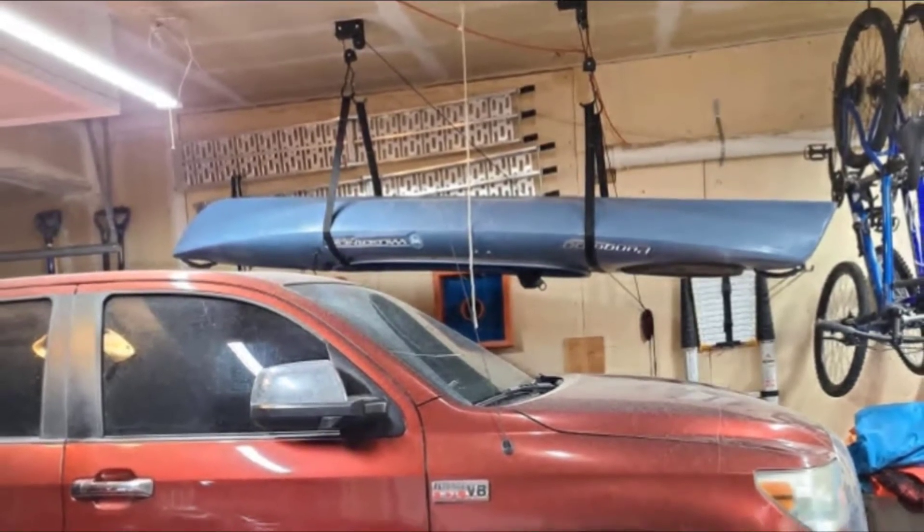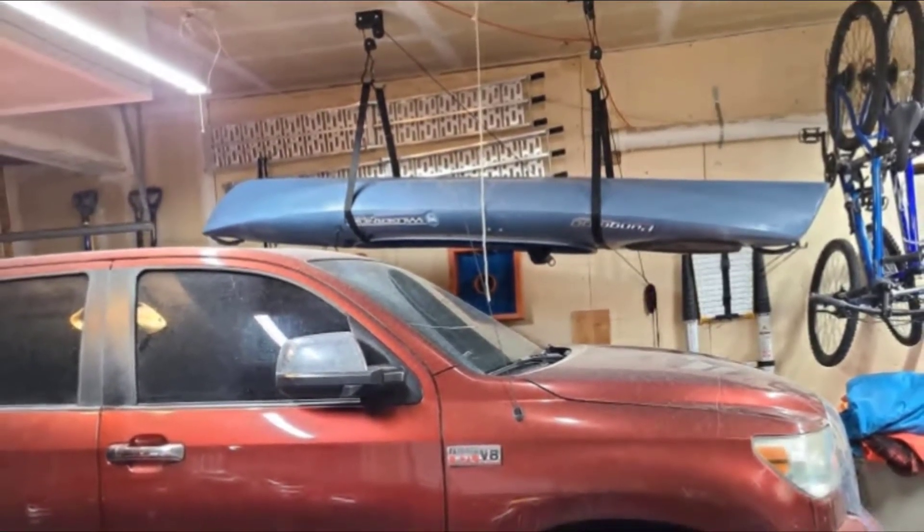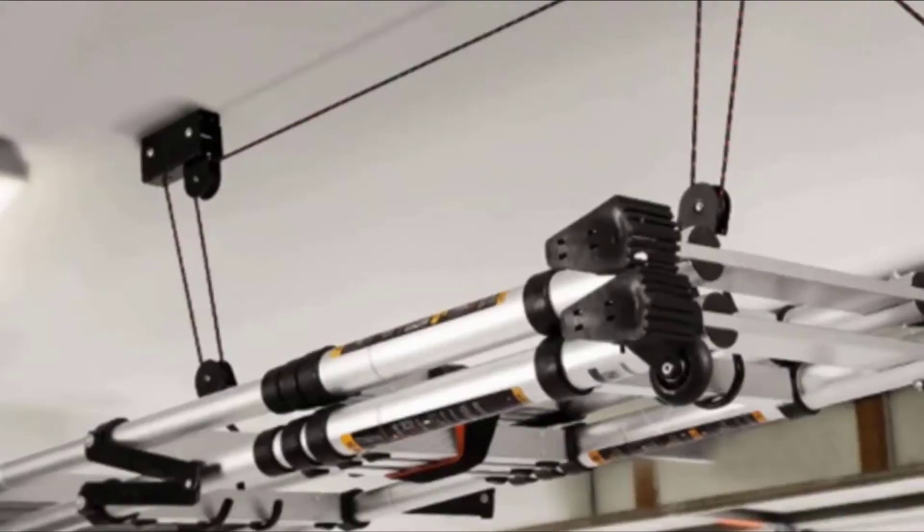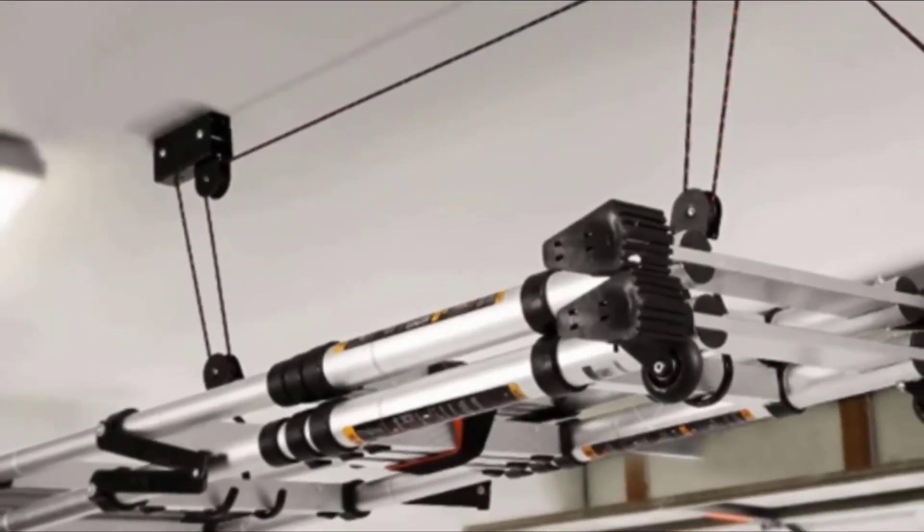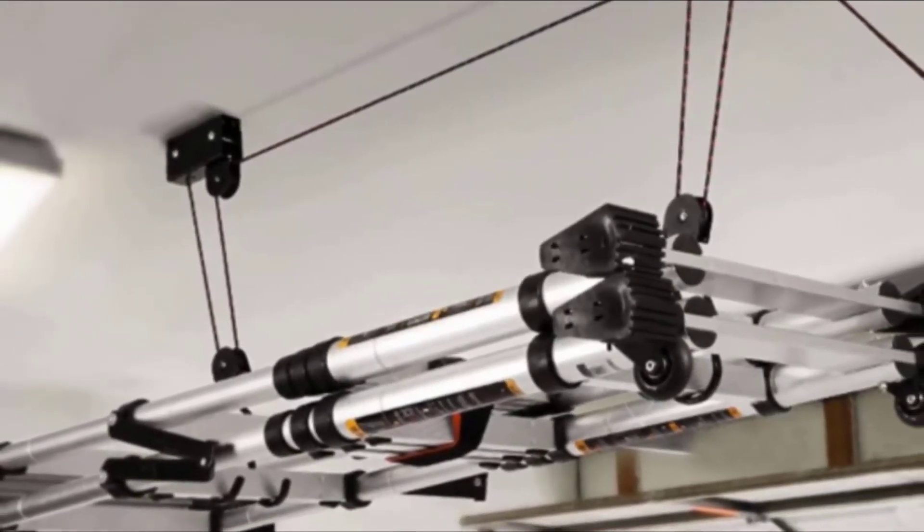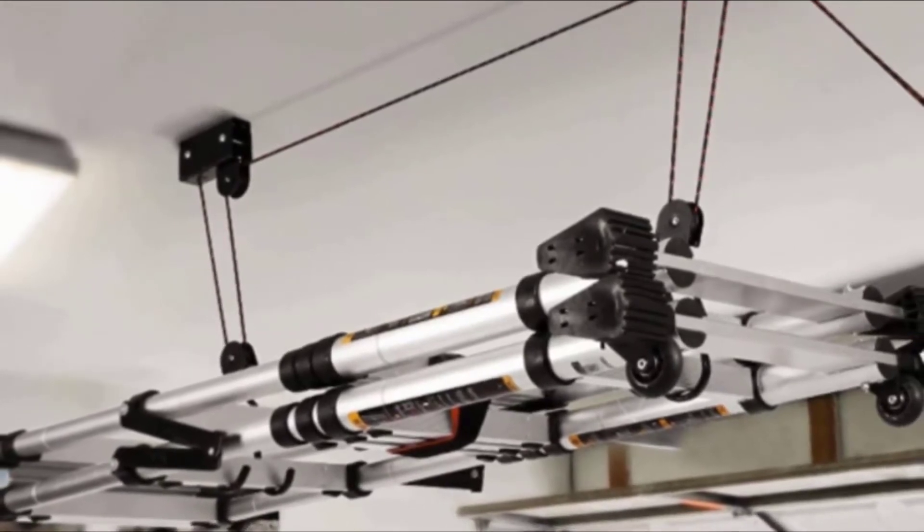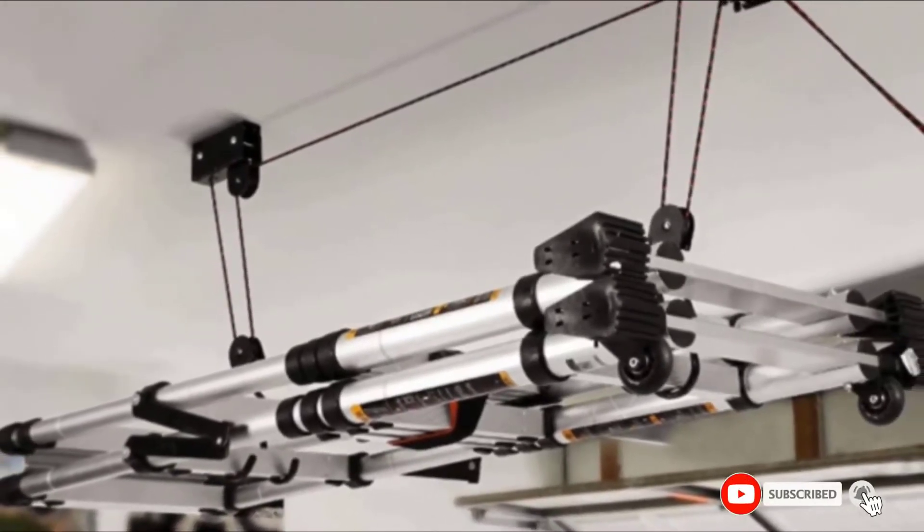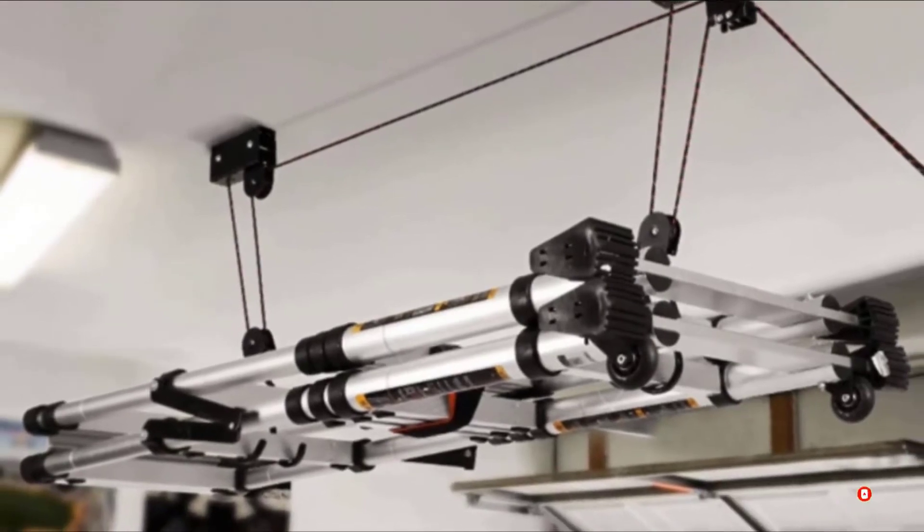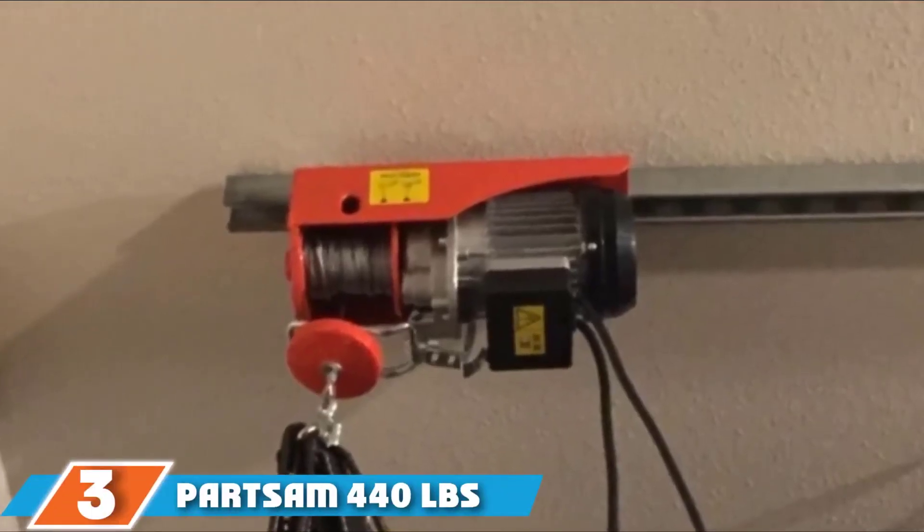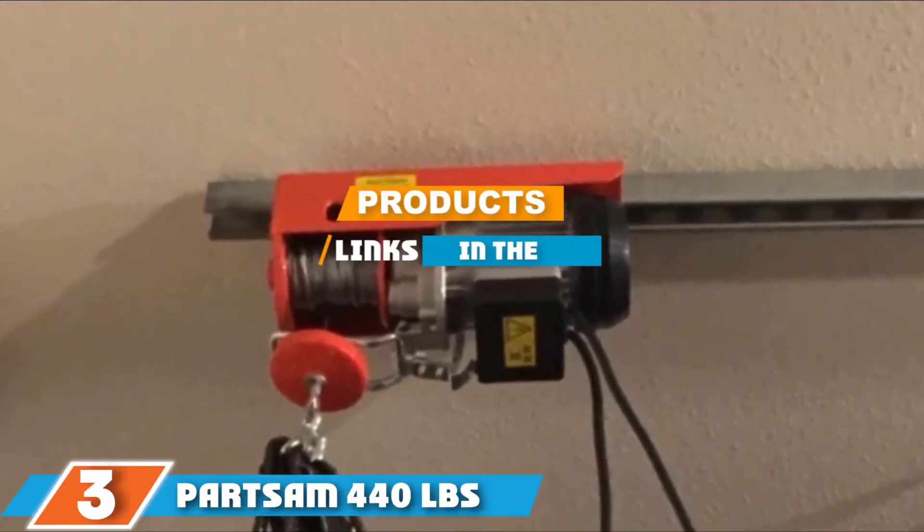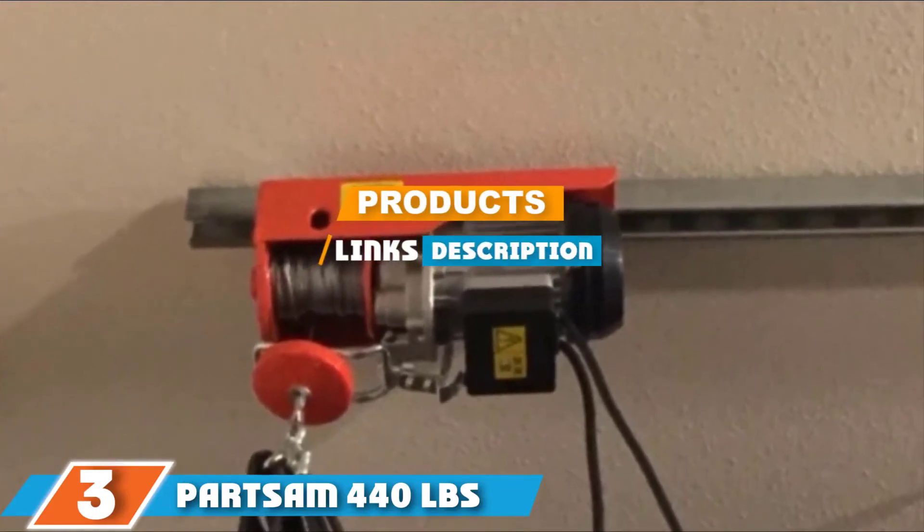The hoist system also features a safety locking function that helps to prevent accidental drops. The lock is designed to hold the load in place when the rope is secured to the wall at a 45 degree angle. It comes with instructions and all the necessary hardware so that you can install it easily.